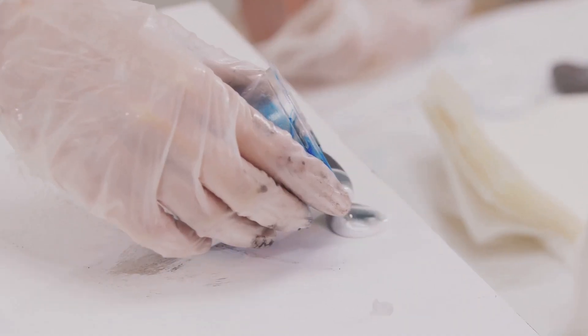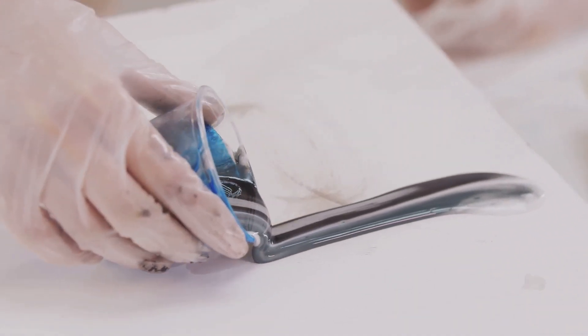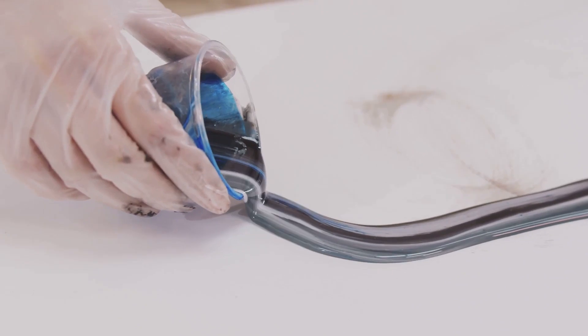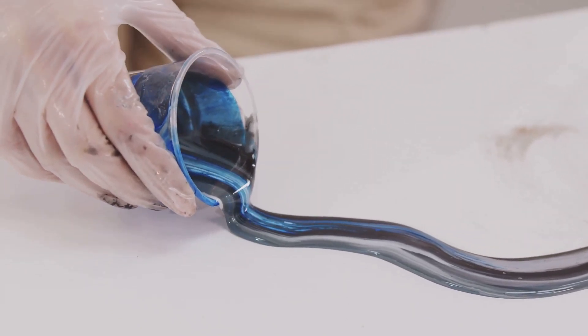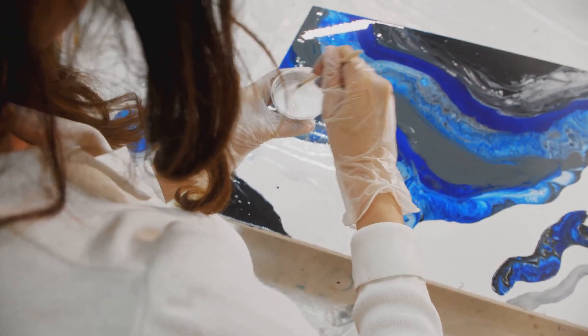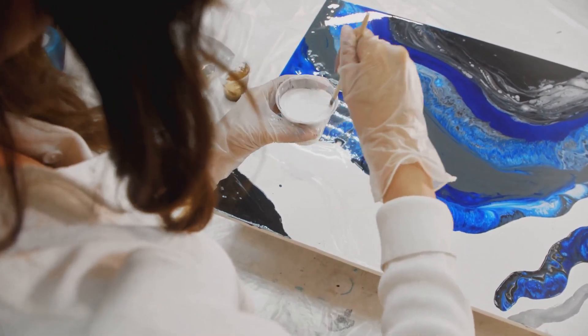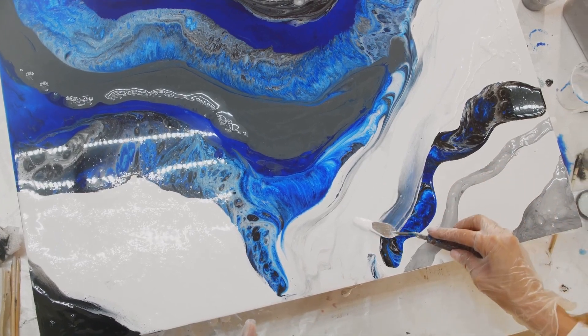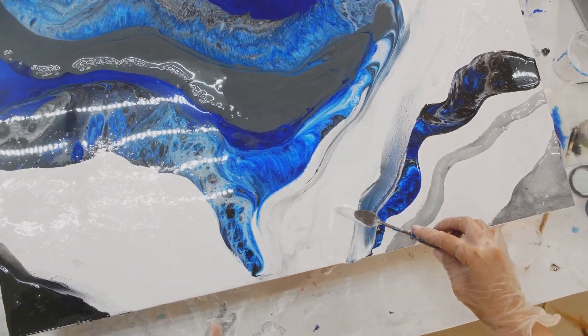Once the components are thoroughly mixed, the real fun begins. Pouring is where your creativity truly takes flight. You can pour the resin into molds or onto surfaces, adding colors and embellishments as your heart desires. Every drip, every swirl is a step closer to your finished masterpiece.